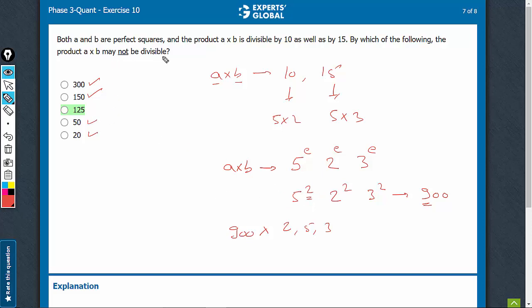The question is asking may not be divisible. So this is a fine option. If the question were may be divisible, then 125 would have qualified for a may be option. Right now, C is the right answer.